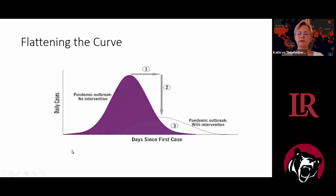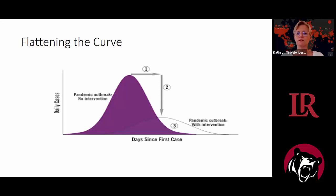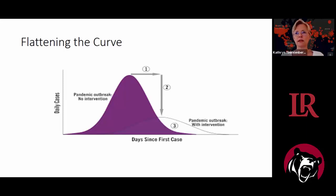Another concept you've heard a lot about is flattening the curve. Part of what we're trying to do is spread the cases out over time, which buys us time to potentially identify treatments, develop a vaccine, and keep from exhausting our resources. We've talked about flattening the curve during influenza pandemics as well, where one resource we want to preserve includes medications. We are trying to spread out the cases.